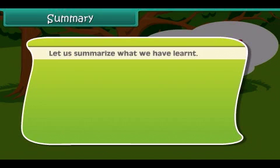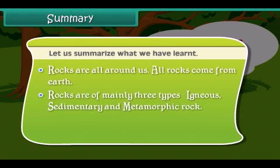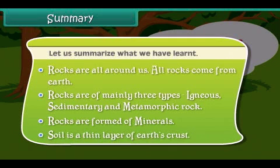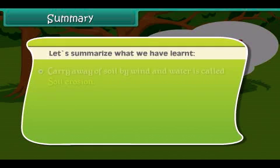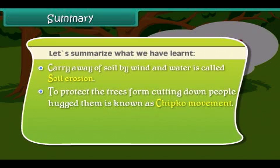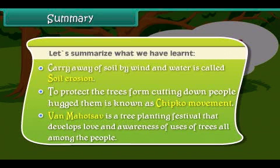Let us summarize what we have learned. Rocks are all around us and all rocks come from the earth. Rocks are mainly of three types: igneous, sedimentary, and metamorphic. Rocks are formed of minerals. Soil is a thin layer of the earth's crust. Carrying away of soil by wind and water is called soil erosion. To protect trees from being felled, people hugged them — this movement is known as the Chipko Movement. Van Mahotsav is a tree planting festival that develops love and awareness of the uses of trees among the people.